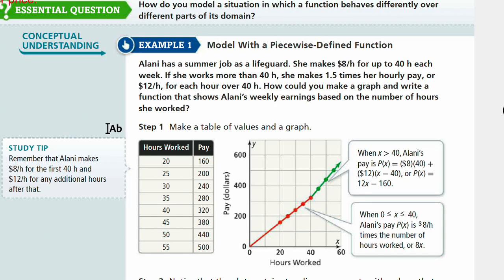For example, Elani has a summer job as a lifeguard. She makes $8 per hour for up to 40 hours each week. If she works more than 40 hours, she makes 1.5 times her hourly pay, or $12 per hour, for each hour over 40 hours. How could you make a graph and write a function that shows Elani's weekly earnings based on the number of hours she worked?